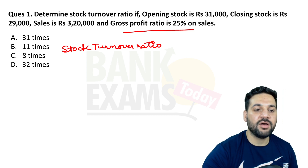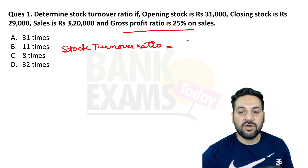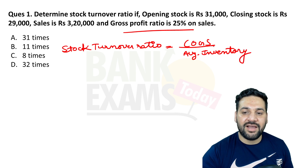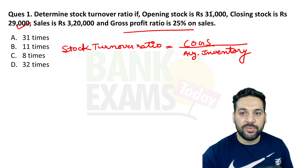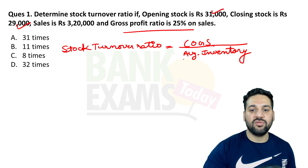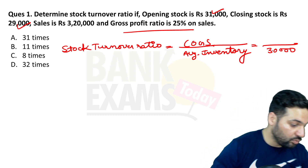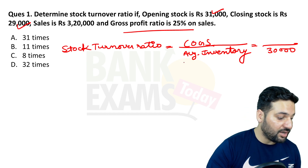The stock turnover ratio formula is cost of goods sold divided by average inventory. It is very easy to calculate the average inventory: closing stock is 29,000 and opening stock is 31,000, so average inventory is 30,000.